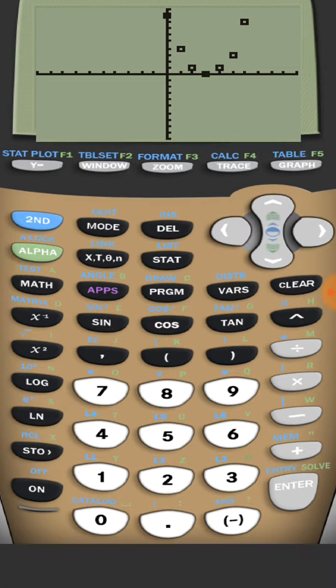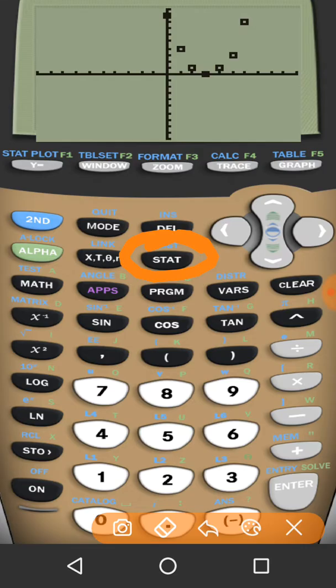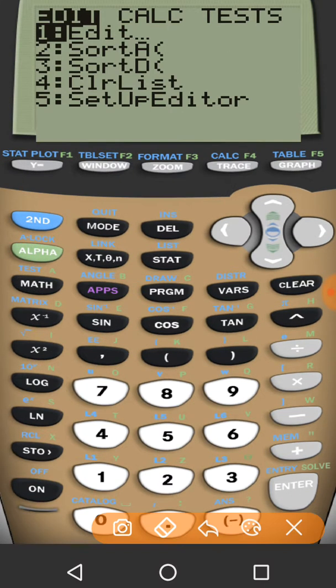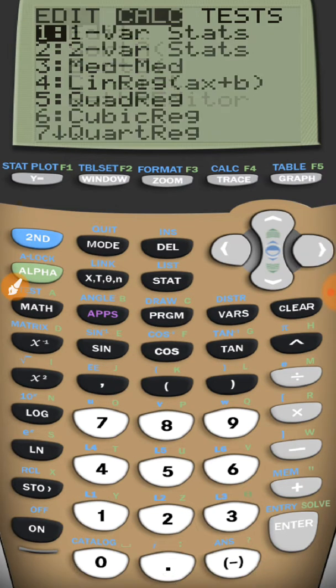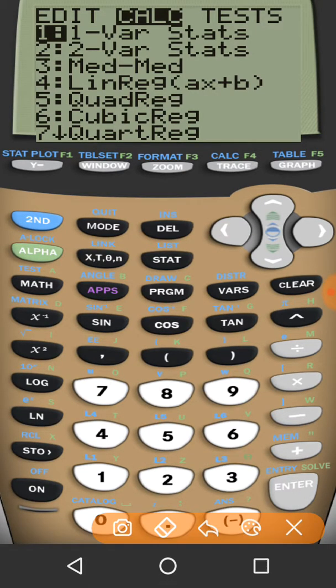And another place you can see this is if you press y equals there, you notice how we just turned that first plot on up there. To turn it off from this menu, you just go up and press Enter and see how it's now off. So it's important when you're not using the plots to leave them all off, but we want to turn that one on.